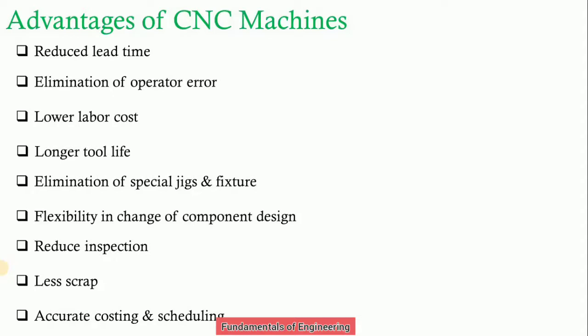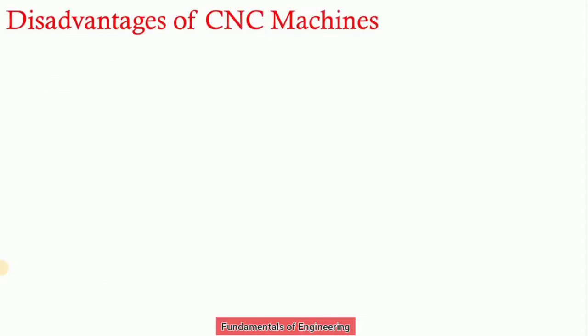Disadvantages of CNC machines include higher investment cost. In conventional machining, a skilled worker produces parts but cannot guarantee the same quality and dimensions across multiple parts. In CNC machines, whether you produce 1 part, 10, 100, or 1000 parts, they all have the same dimensional accuracy and quality. Considering the output and productivity, the investment cost can be easily justified.